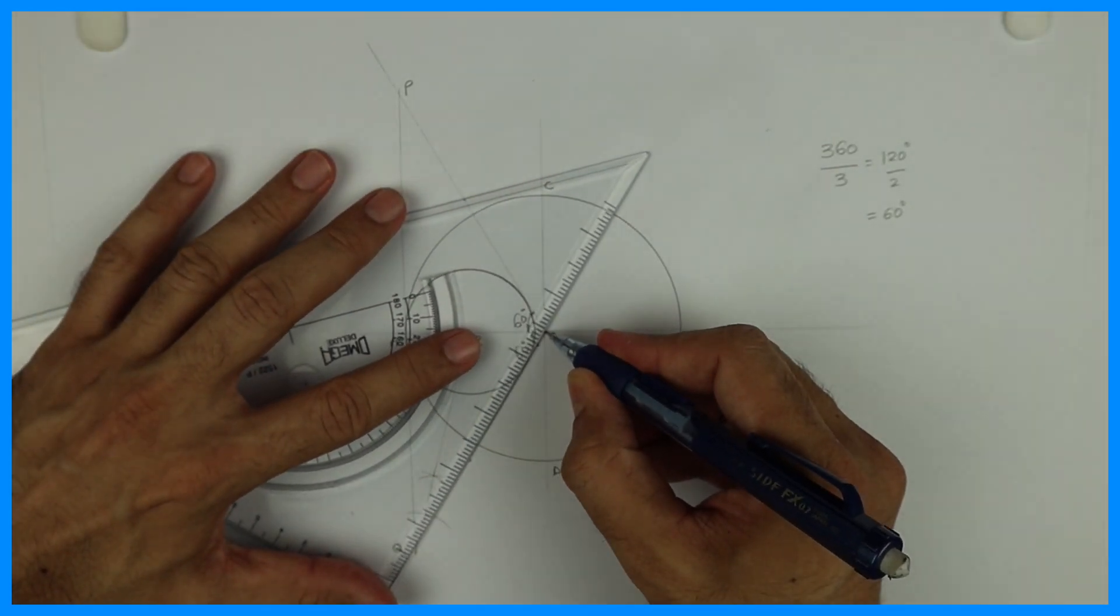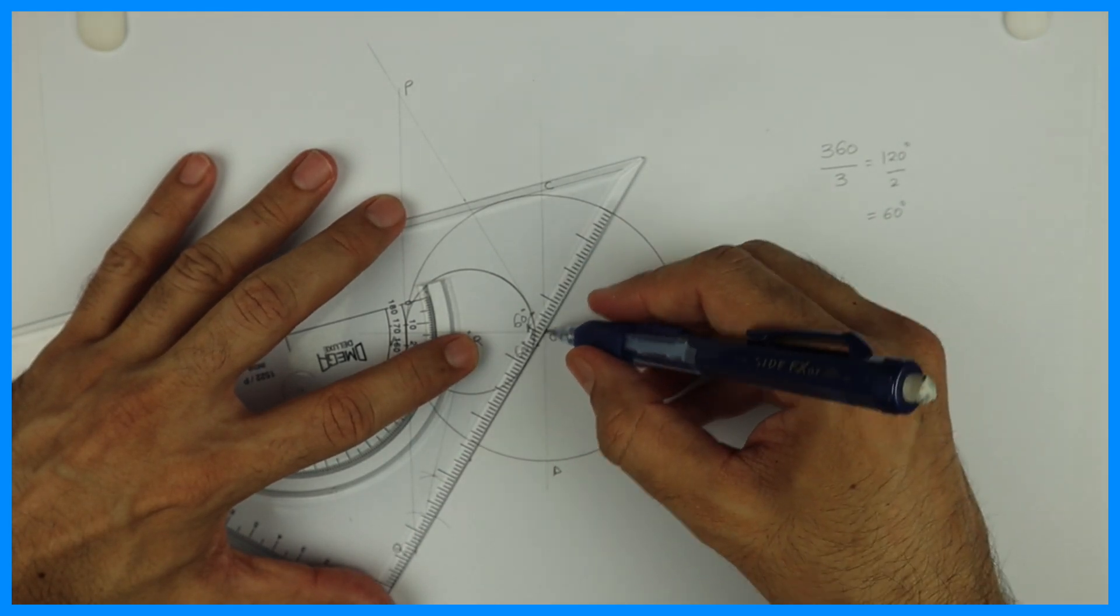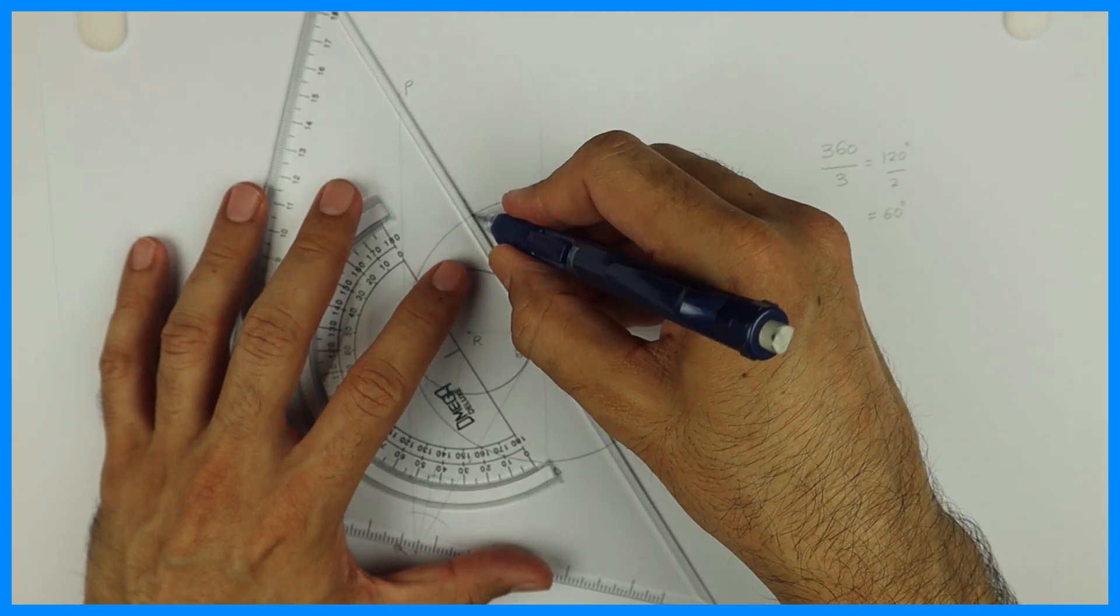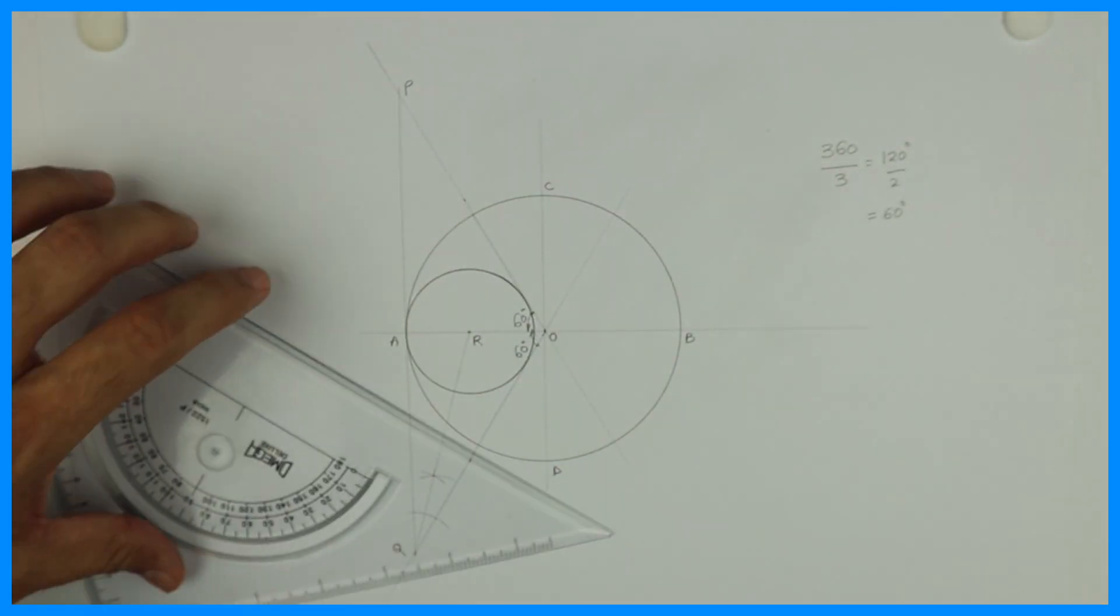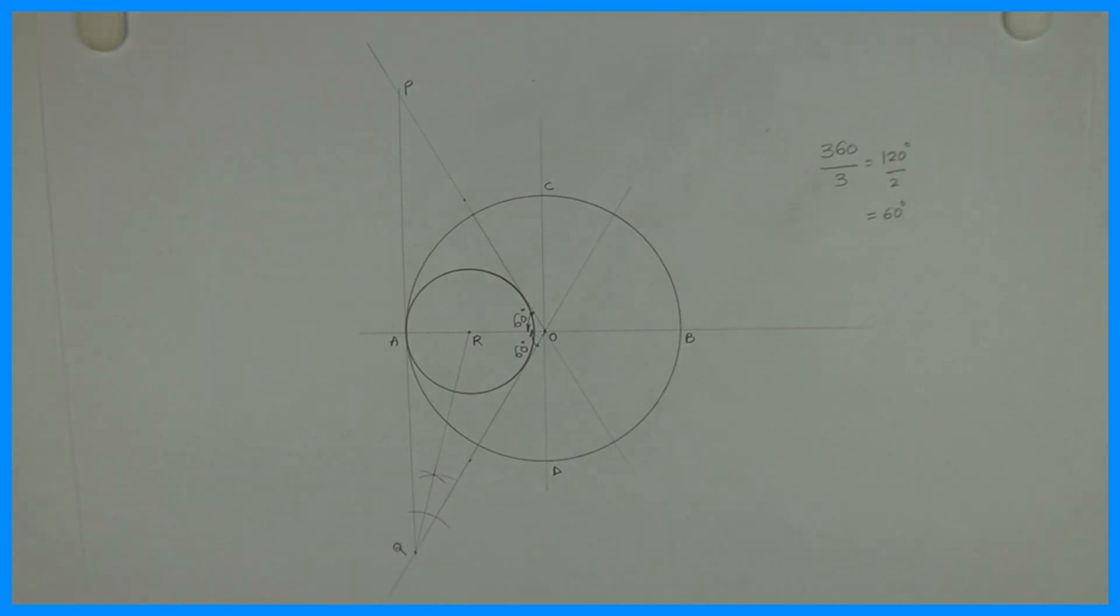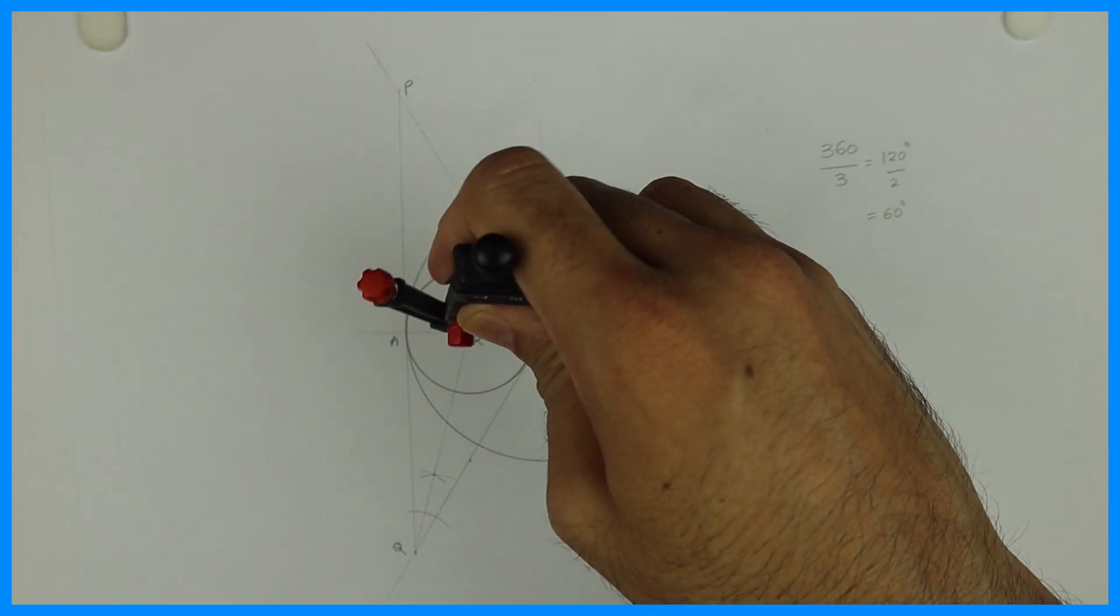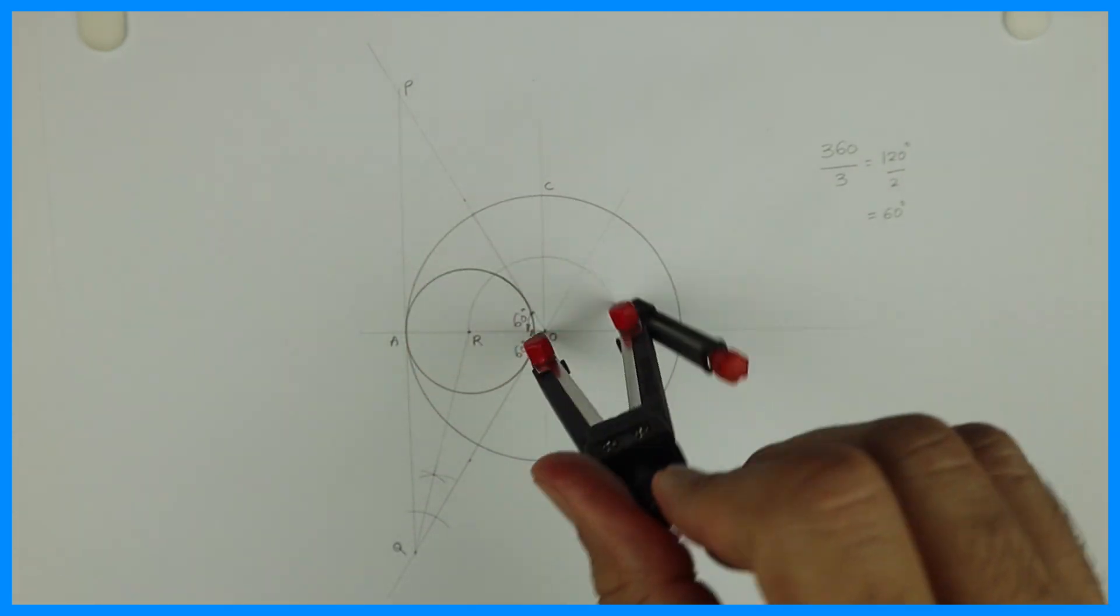After that, you extend this line QO and PO. Then you take O to R and you transfer the radius. This is generally called mid-circle.